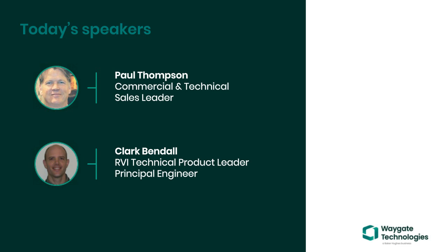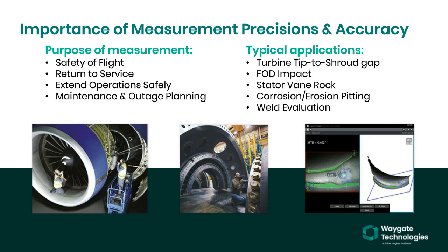When one needs to understand the size of an indication, having both precision and accuracy when measuring are extremely important, and people measure for a lot of different reasons. In aerospace, they're looking for safety of flight decisions, or in many different scenarios, people want to know if an asset can be returned to service or if operations can be extended safely and then do some additional maintenance and outage planning.